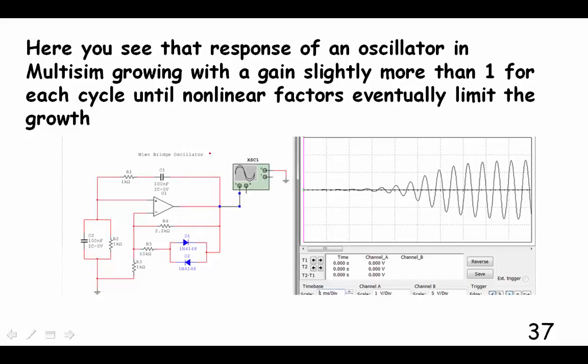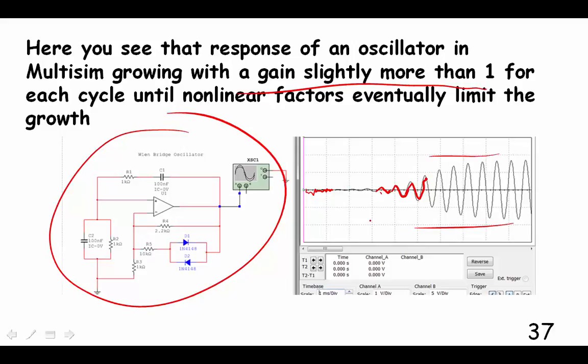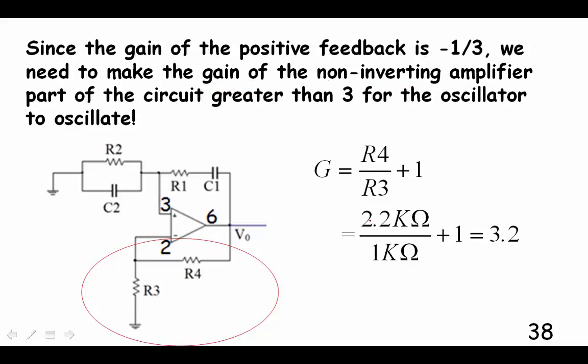I just ran a simulation of a wine bridge oscillator. Looking at it at the initial point, it just starts oscillating a little bit. And every little oscillation, it's getting a little bit bigger because the gain is more than one. If it's 1.1, then every one of these oscillations is going to be 10% bigger than the previous oscillations. They just keep going like that. But there are factors that limit the growth of this. We'll look at that in our regulator circuit.